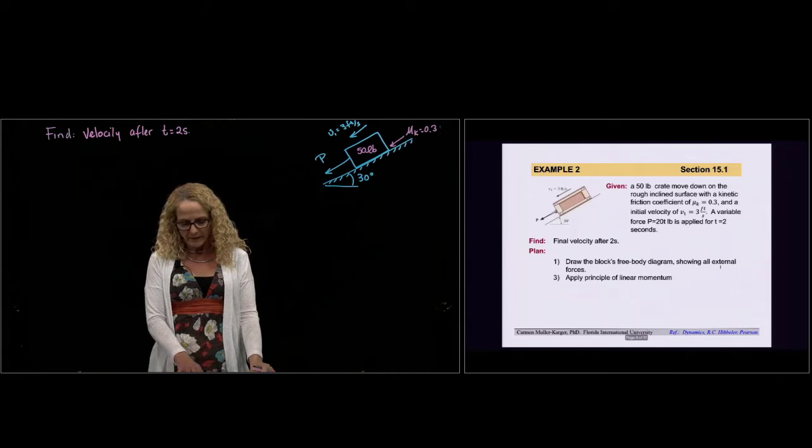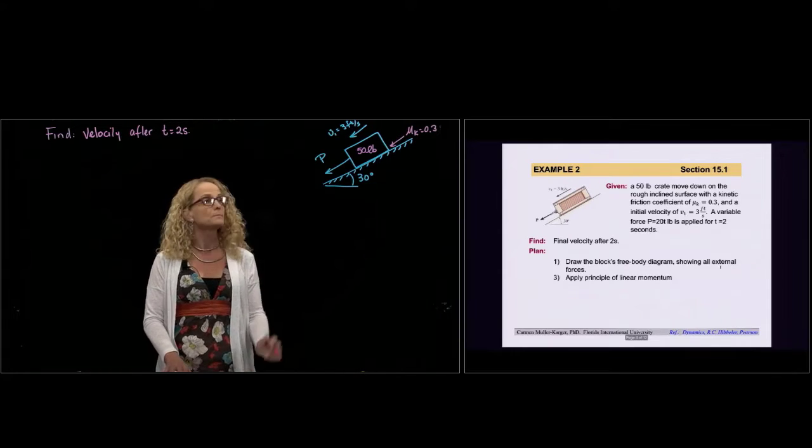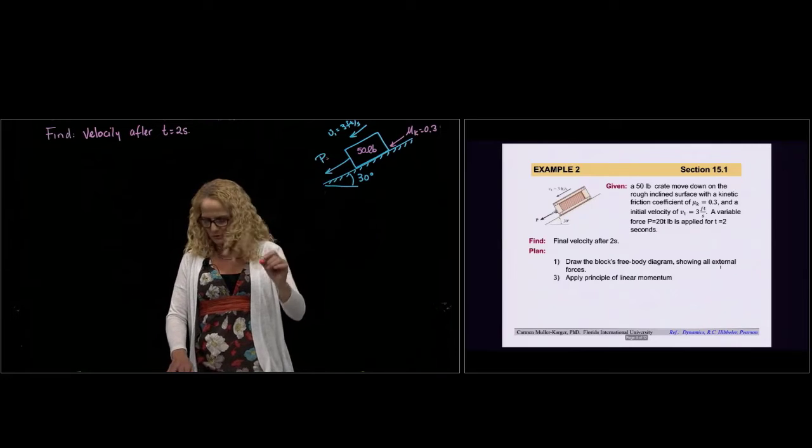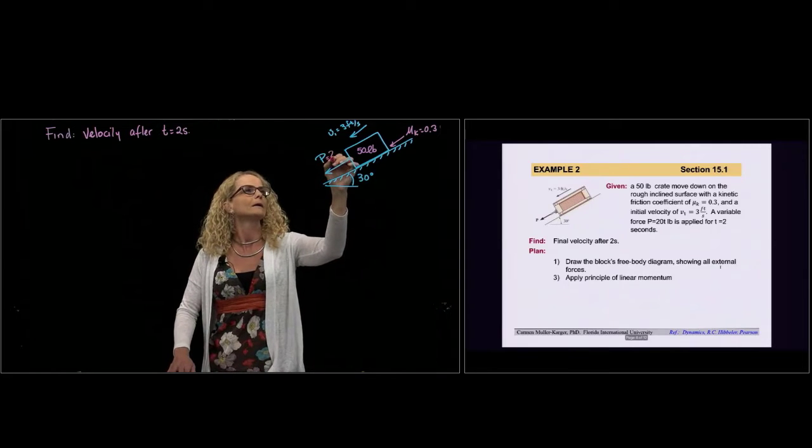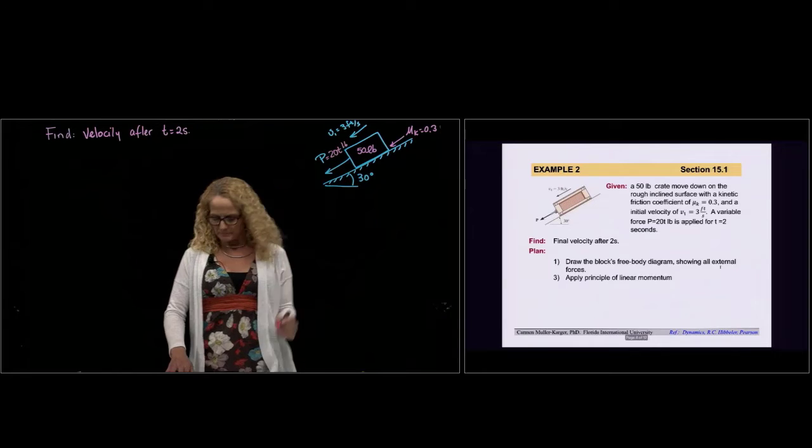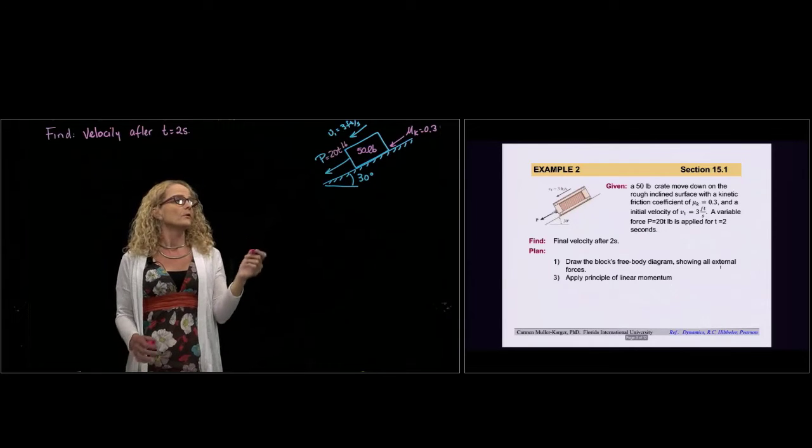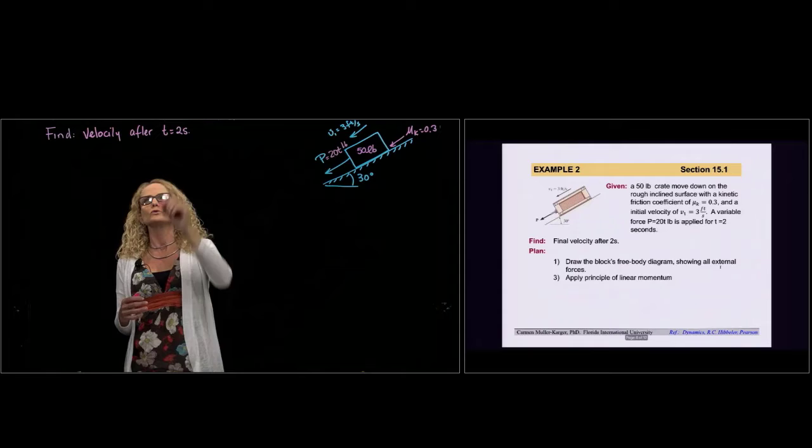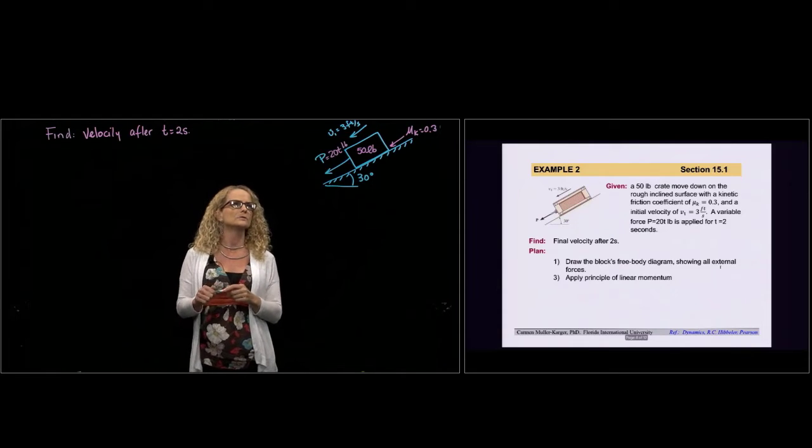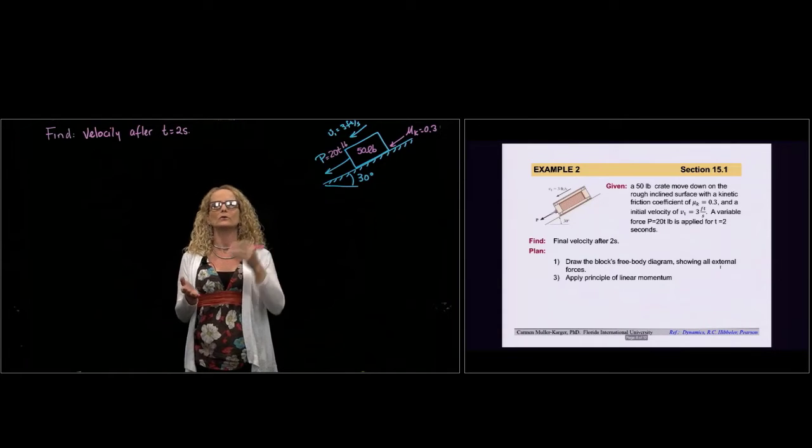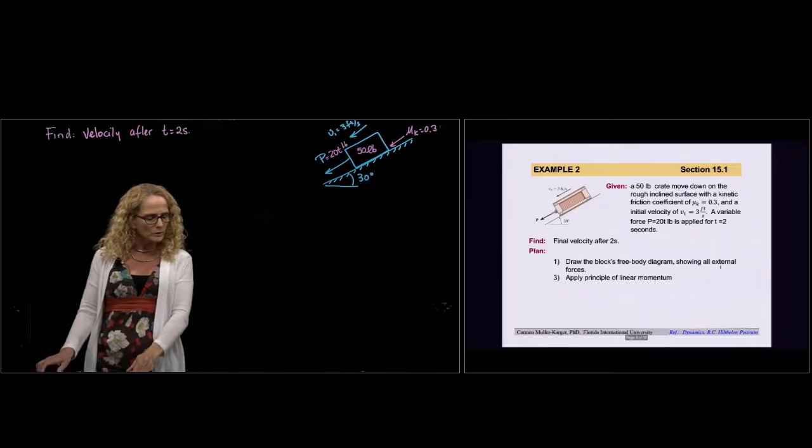And we have a variable force P which is equal to 20t pounds, and that force is applied over 2 seconds, and we are being asked to find the velocity after those 2 seconds. So what do we do here?